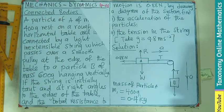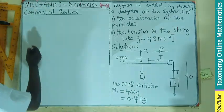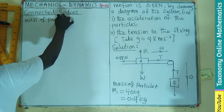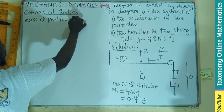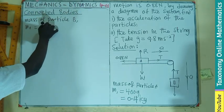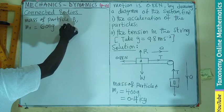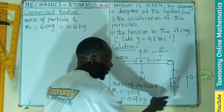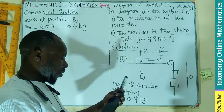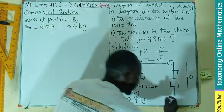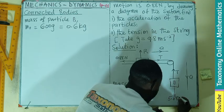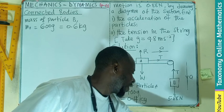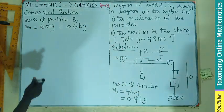Then we also need to find the mass of particle B, which is the 600. So here we can find the mass of particle B as m2, which is 600 grams, becomes 0.6 kg. So here we are multiplying 0.6 kg by the force of gravity, and that will give you 5.88 newtons.